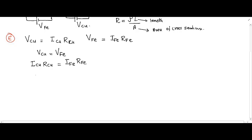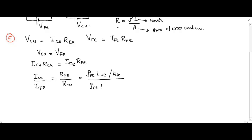By rearranging, we get the ratio of the current through the copper wire to the current through the iron wire as the resistance of the iron wire divided by the resistance of the copper wire. Substituting R = ρL/A, the length and area of cross-section cancel since they are the same for both wires. So the current ratios are simply the resistivity ratios.